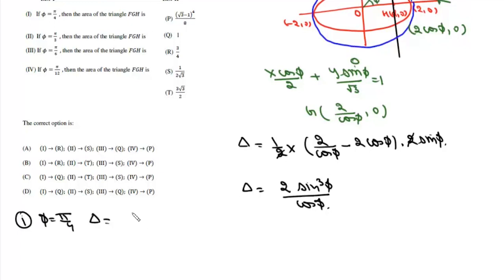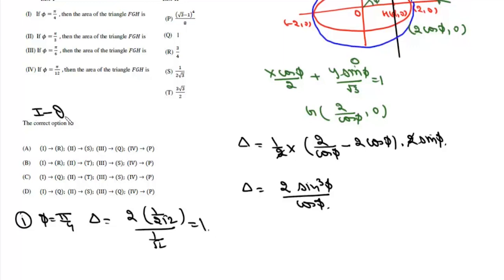For the first case, φ = π/4. The area Δ = 2 × (1/√2)³ / (1/√2) = 2 × (1/(2√2)) / (1/√2) = 1. So this first case matches Q.